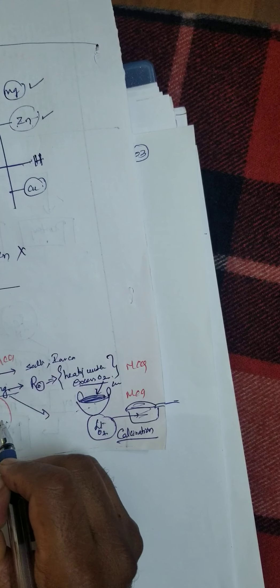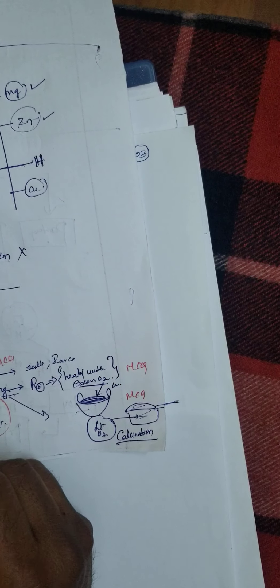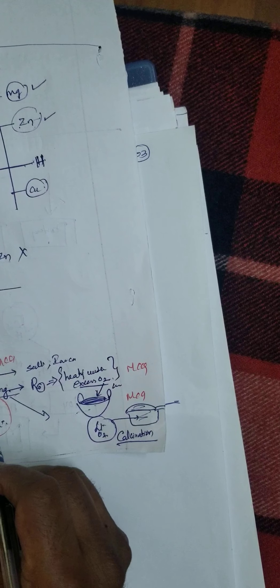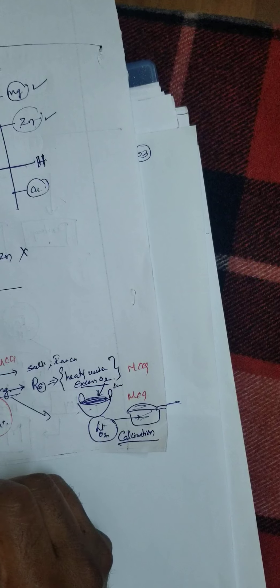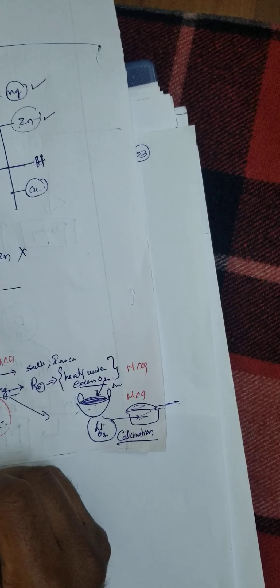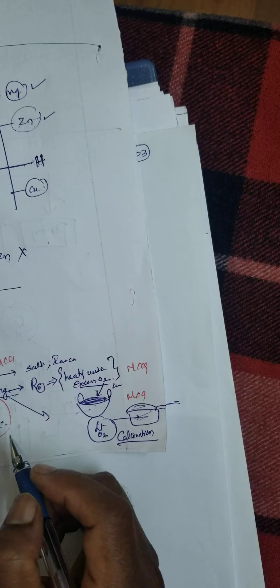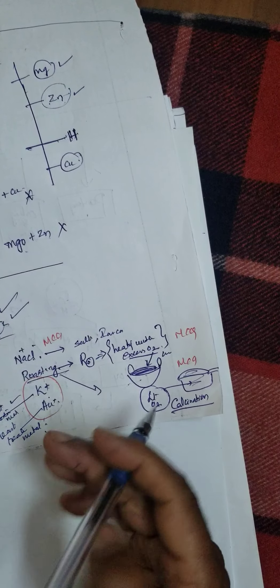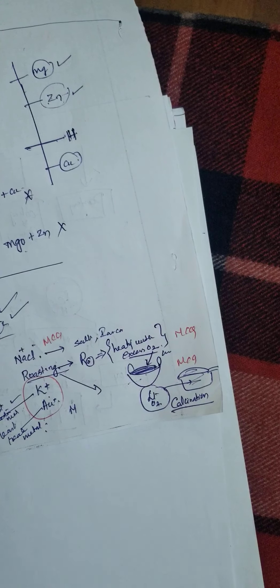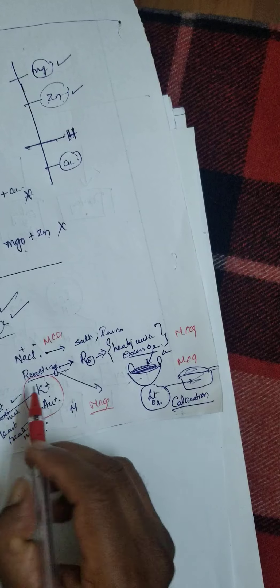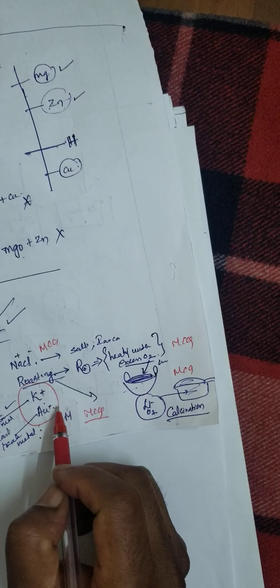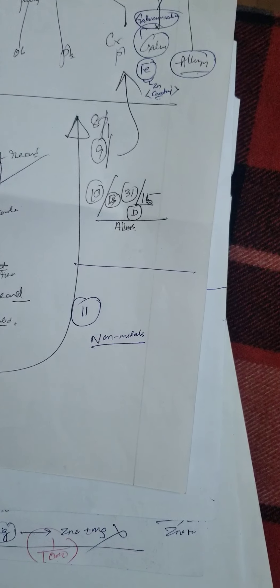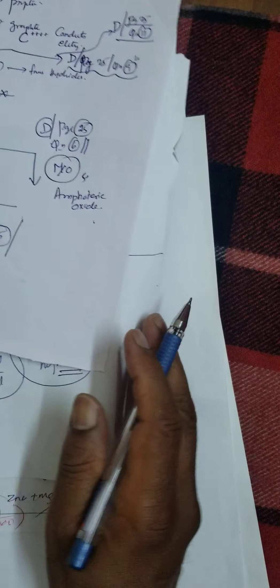Most reactive metal — potassium. Least reactive metal — platinum. Most reactive metal, least reactive metal — these are important questions. Why is sodium kept under kerosene? Because sodium is immersed in kerosene oil to prevent it from reacting with air.